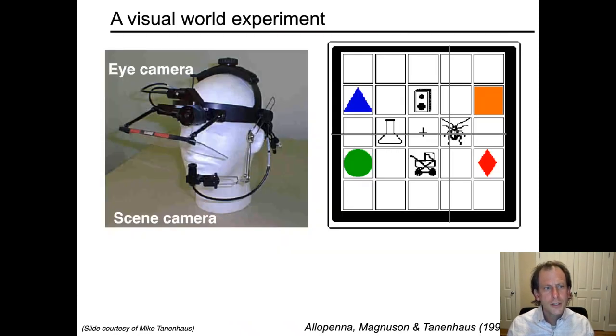So first of all, this is the kind of eye tracker that was used in this experiment. You can see it's something that is on the head of the speaker, and there is an external camera right here that is facing the scene. And then there is a camera that you can't actually see, which is bouncing infrared light off of the eye off of this mirror, which is transparent glass for visible frequencies, but is a mirror for infrared.